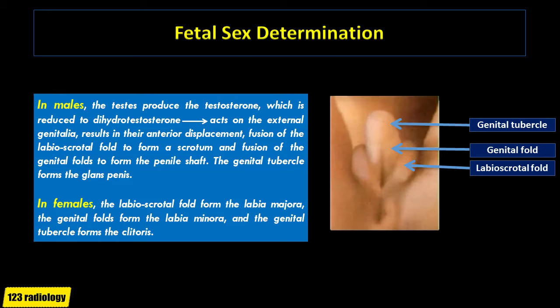In males, the testes produce testosterone, which is reduced to dihydrotestosterone. Dihydrotestosterone acts on the external genitalia, resulting in their anterior displacement, fusion of the labioscrotal folds to form a scrotum, and fusion of the genital folds to form the penile shaft. The genital tubercle forms the glans penis in males.